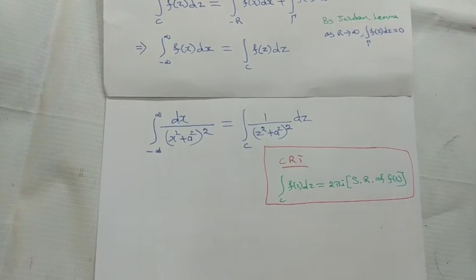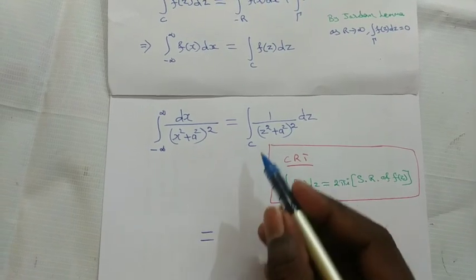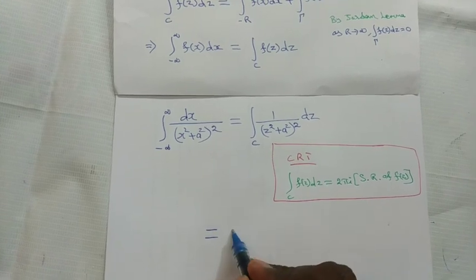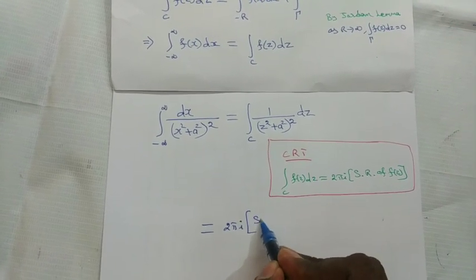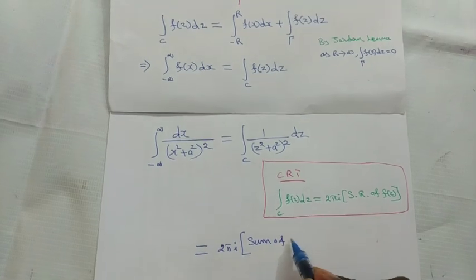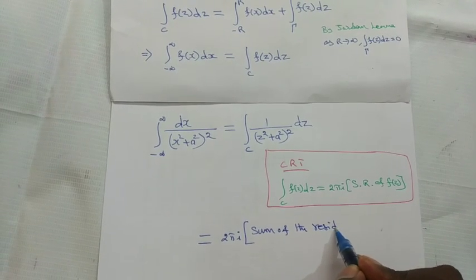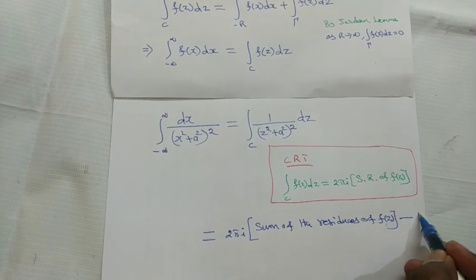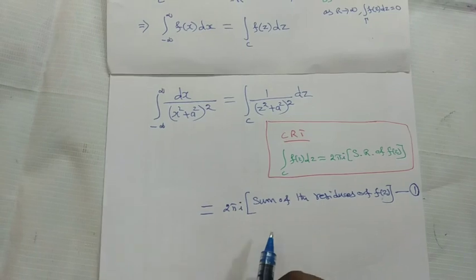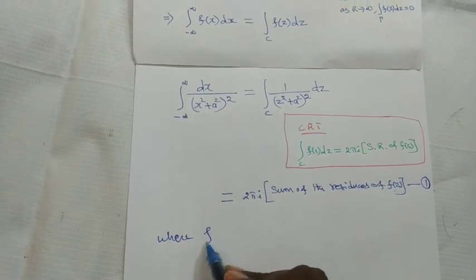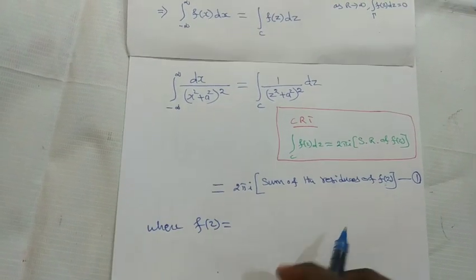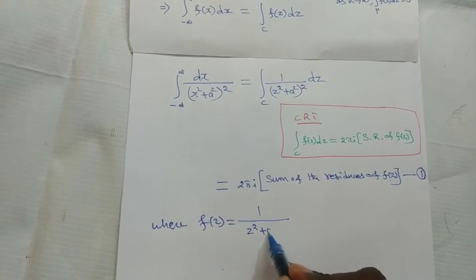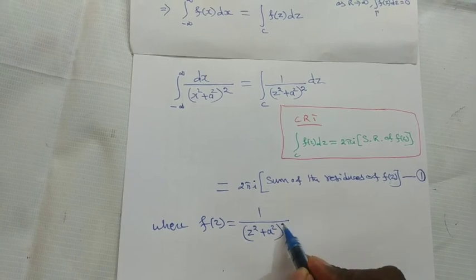Where f(z) = 1/(z² + a²)². To find the residues, first find the poles by equating the denominator to zero: (z² + a²)² = 0, which gives z² + a² = 0, so z² = −a², and therefore z = ±ia.